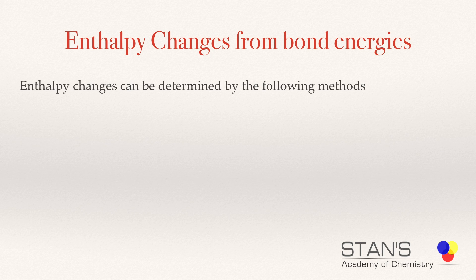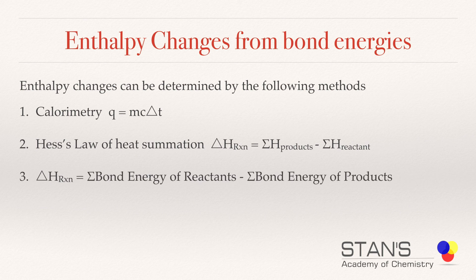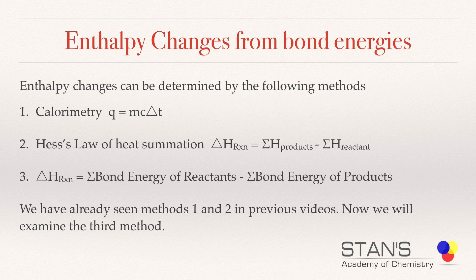Now, there are three methods for determining enthalpy changes. The first method is calorimetry — we use the equation q = mcΔT and a bomb calorimeter to determine the enthalpy change. The second method uses Hess's law of heat summation. Today, we will be determining enthalpy of reaction using bond energies, and the equation we are going to use is: enthalpy of reaction equals the sum of the bond energies of the reactants minus the sum of the bond energies of the products.